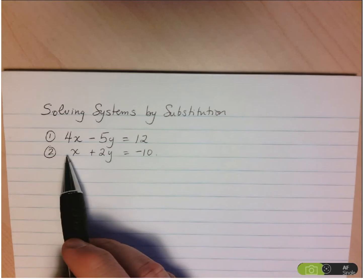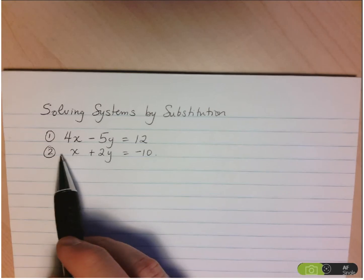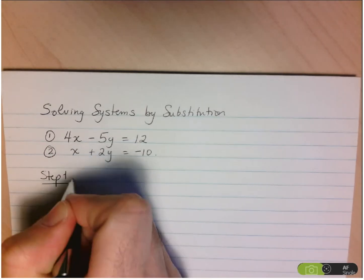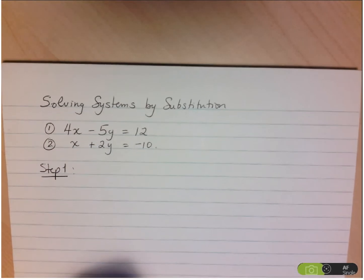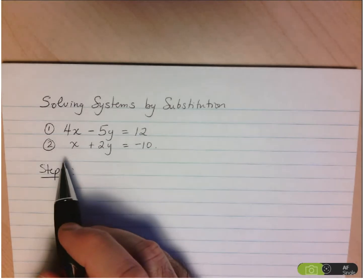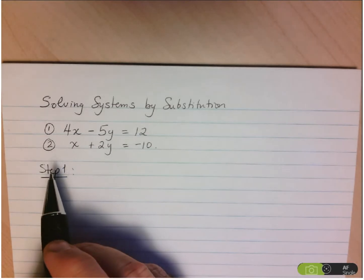The reason being is the first step for substitution is to isolate one of the variables. So we know that if one of the variables has a coefficient equal to 1 or negative 1, we won't end up with any fractions. Of course, you could use it even if they all had coefficients, but it would make the process a little more difficult.